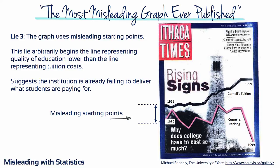Lie number three: the graph uses misleading starting points. This lie arbitrarily begins the line representing quality of education — Cornell's rank compared to other institutions — lower than the line representing tuition costs as a proportion of income. Suggesting that an institution already failing to deliver what students are paying for has, over the last 11 years, or perhaps 35 years, become dramatically worse. There's no reason, except deception, to start one line higher or lower than the other. The scales are not comparable and should not even be placed on the same graph.